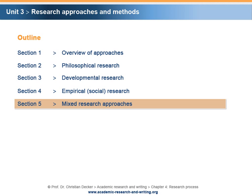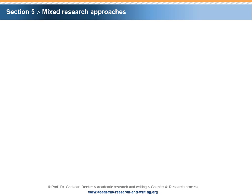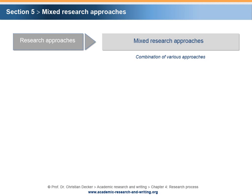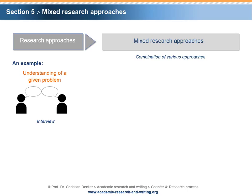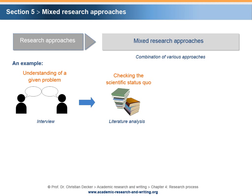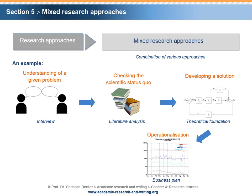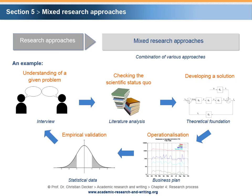Section 5 – Mixed Research Approaches. In order to solve a problem in the context of an academic project, it can be advantageous to use mixed research approaches, which is to combine various approaches. For example, a general understanding of a given problem can be developed by means of qualitative interviews. Then, it might be advisable to check the scientific status quo by a thorough literature analysis. While developing a solution for the problem, it might be necessary to build a theoretical foundation. The results might lead to the operationalization, for example, by way of a business plan. In the next step, an empirical validation based on statistical data could follow. This, in turn, can be integrated into a further understanding of the initial problem.